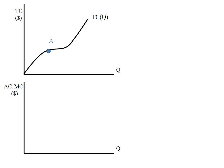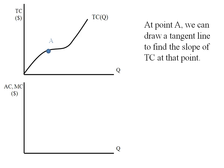Here we have a total cost function. Notice that it's increasing as output increases, and I've chosen a particular point A. At point A, we can draw a line tangent to the total cost function to find the slope of that cost function at point A.